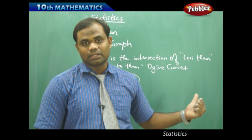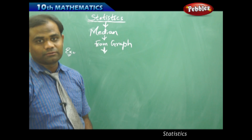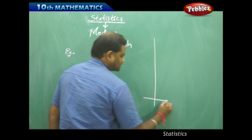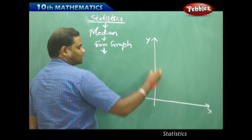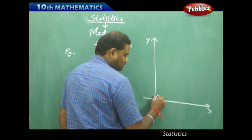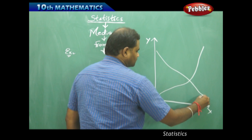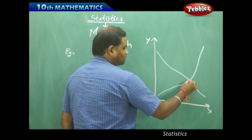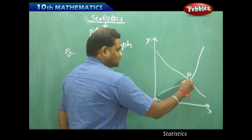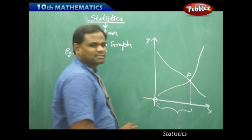So to start with the example problem: for the previous example problem, let's see how the point of intersection is obtained from the two graphs merged together. Taking the y-axis and x-axis, I plot the two ogive curves — one being the less than ogive curve and one being the greater than ogive curve — which clearly gives me a point of intersection somewhere here. This point of intersection, P, decides the median, because the x-coordinate calculated from this point decides the median.